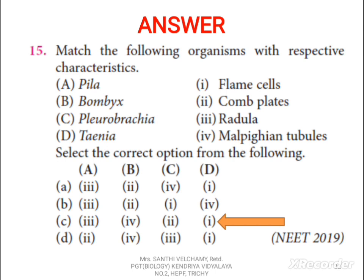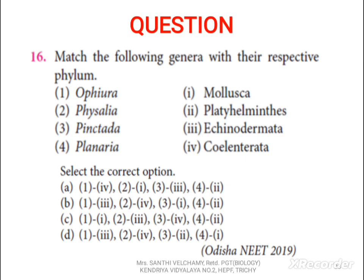Next, 16th question: two columns are given — match the options 1, 2, 3, 4 in normal letters with 1, 2, 3, 4 in Roman numerals. After matching, find the correct option. The correct answer is B.